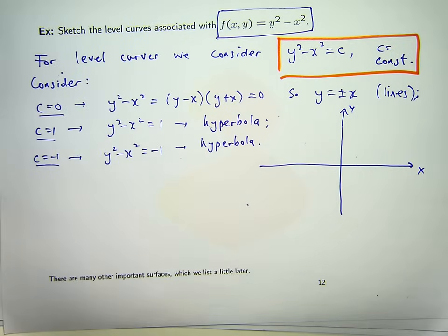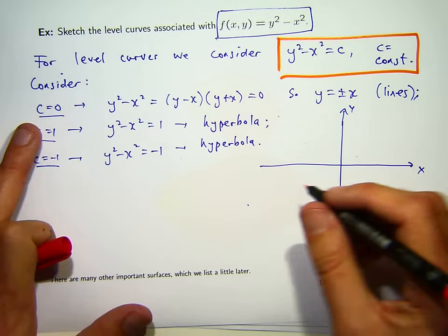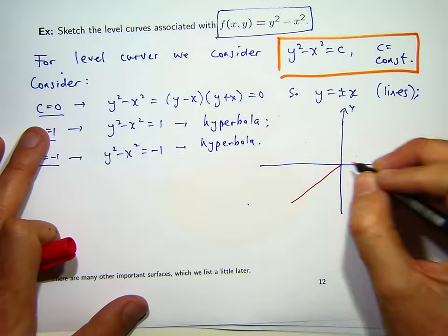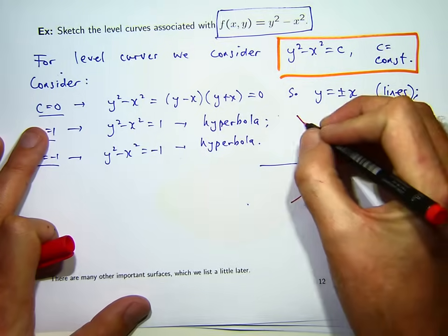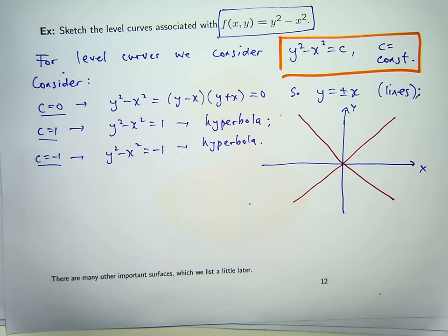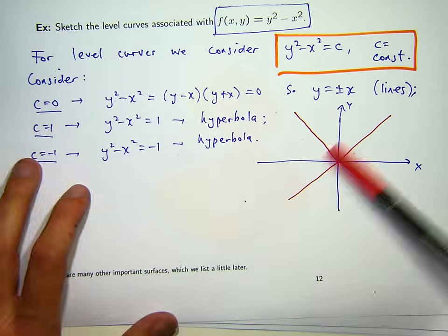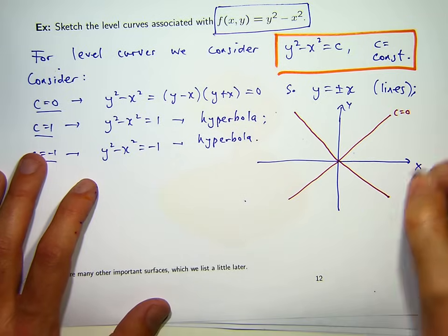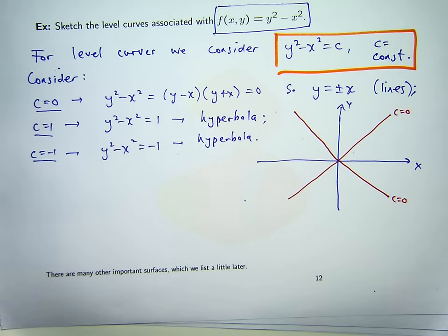Okay, so the easiest case is the case C equals 0. So, basically draw in the line y equals x and y equals minus x. So both of these curves are associated with the case C equals 0. Now what does this mean with the surface? Well, if I intersect the surface with the xy plane, then you get these two, the curves of intersection are these two lines.